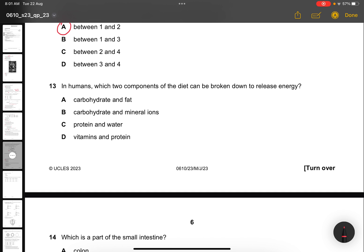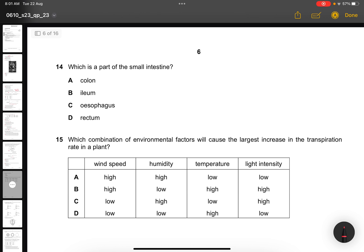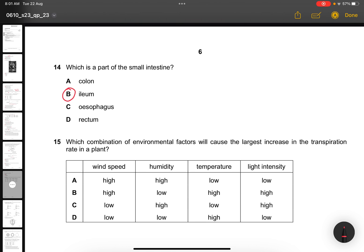Question 13. In humans, which two components of a diet can be broken down to release energy? Carbohydrates and fats. This is quite common sense. We all know that carbohydrates is for releasing energy and fat is like an energy store. It means that when there's not enough carbohydrates in your body, they will use the fat as energy. Question 14. Which is part of a small intestine? The answer is B, ileum. The colon is the large intestine, and esophagus and rectum are other parts of the alimentary canal. Question 15. Which combination of environmental factors will cause the largest increase in transpiration rate in a plant? It has to be high wind speed, low humidity, high temperature, and high light intensity. So the answer is B.